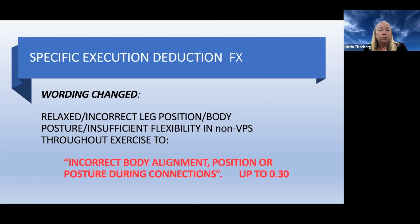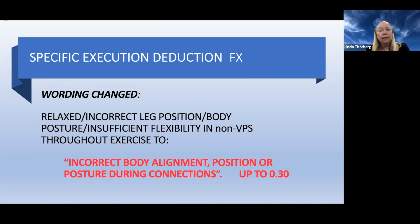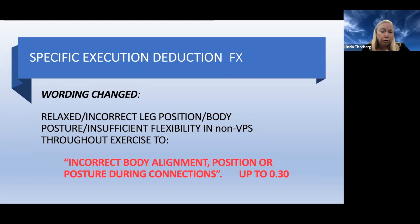We also have a deduction that was raised for relaxed or incorrect leg or body position — body posture, flexibility in non-value parts throughout the exercise. It used to be up to two-tenths, and now it's up to three-tenths. This tells us there is more emphasis being placed on those parts of the routine that aren't A's, B's, C's, or D's — the transitions, moving in and out of corners, the different types of movements they're using should show correct body position, posture, and flexibility in those non-value parts.